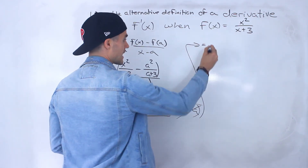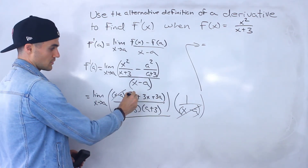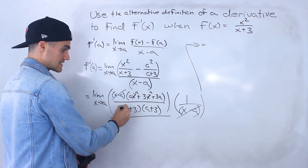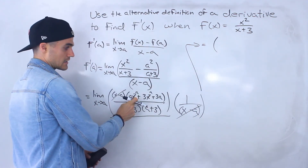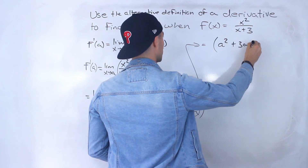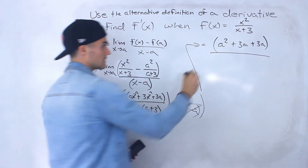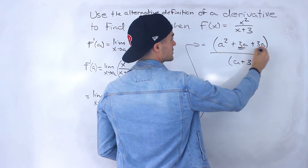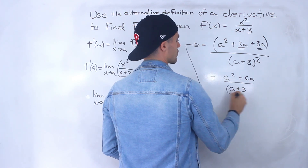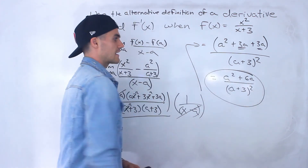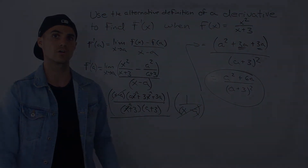Now that the x minus a's cancel, we plug in a for all remaining x values. We get a times a is a squared, plus 3a plus 3a, all over a plus 3 times a plus 3, which is a plus 3 squared. Combining like terms gives a squared plus 6a over a plus 3 squared — exactly the same derivative we got using the original definition.